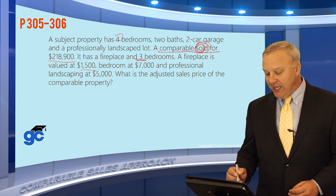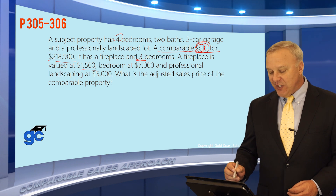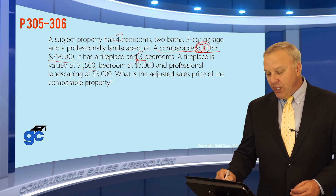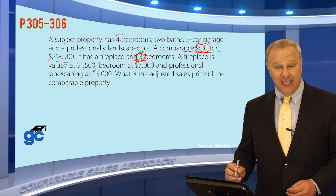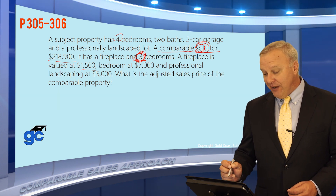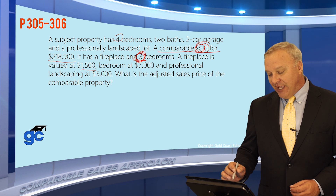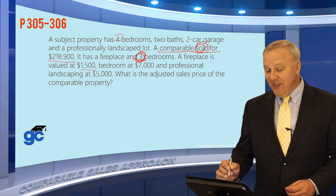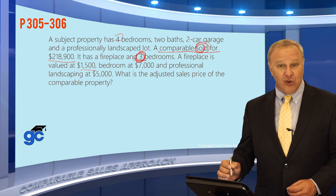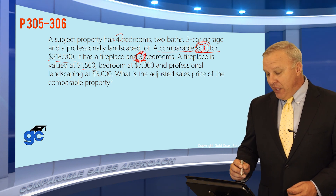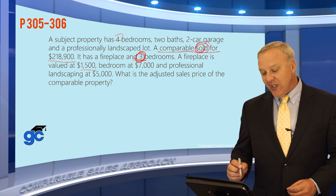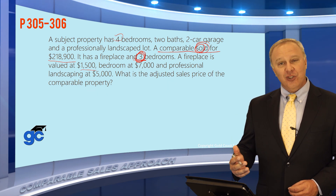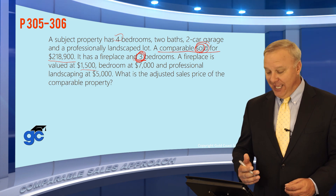We've got a few adjustments to make here. The subject has four bedrooms, the comp only has three — so the comparable is inferior, and we're going to have to add. It also says the comparable property has a fireplace, but the subject does not — in this case the comparable is better, so we're going to have to subtract. Then the subject property has a professionally landscaped lot, but the comparable does not — so the comp is inferior, and we're going to have to add again.